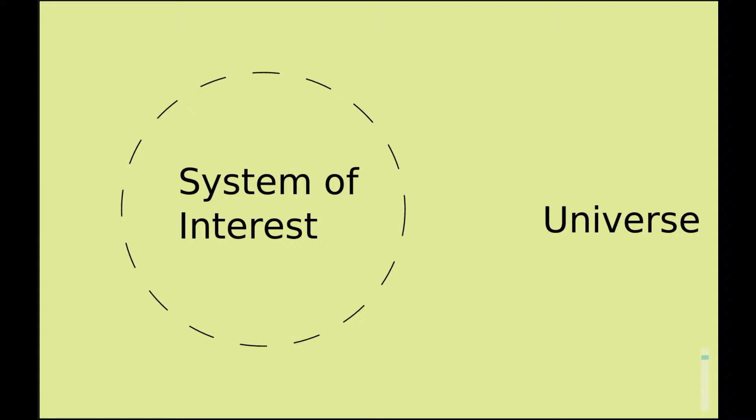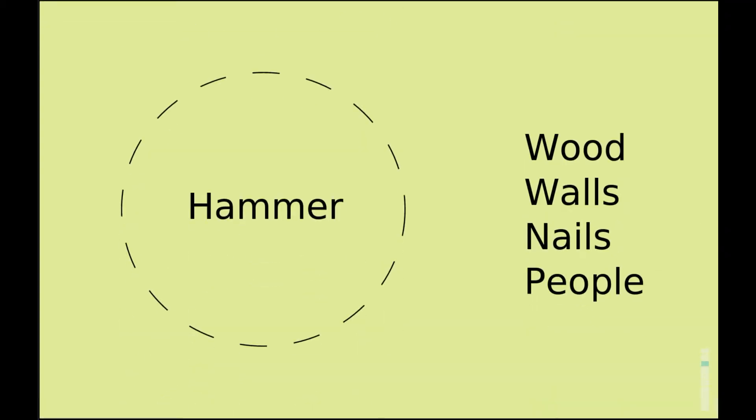I've got an example here that I put in my slides. What is the system of interest? Hammer. Can you think of any things outside the system of interest? Wood, wool, snail, and people. There are things inside the system, and there are things outside the system.